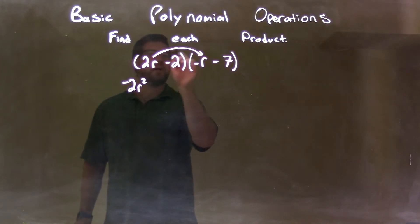Next one, we have 2r times that negative 7. 2r times negative 7 is minus 14r.